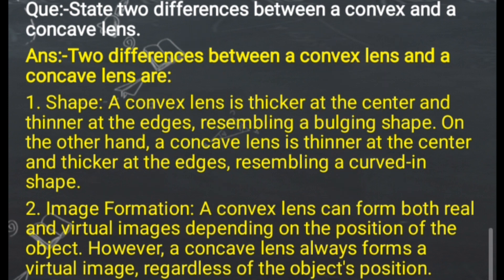The next difference is image formation. We need to focus on image formation. The convex lens can form both real and virtual images, depending on the position of the object. However, the concave lens always forms a virtual image, regardless of the object's position.